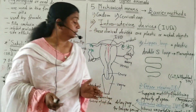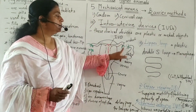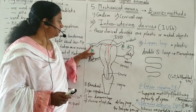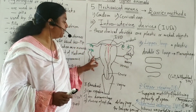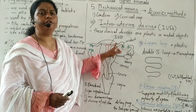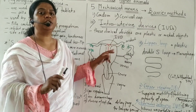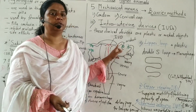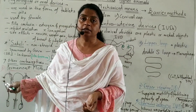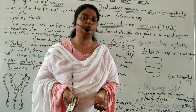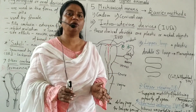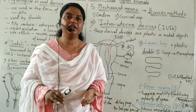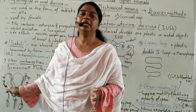In females, the fallopian tubes are tied and then cut — a small part of the fallopian tube is tied off and cut. This prevents the entry of the ovum, so there is no fertilization, no conception, and no pregnancy. In females, this is called tubectomy because the fallopian tube is cut. In males, the vas deferens is cut, so it is called vasectomy. These two family planning operations permanently stop the child-bearing capacity in both males and females.